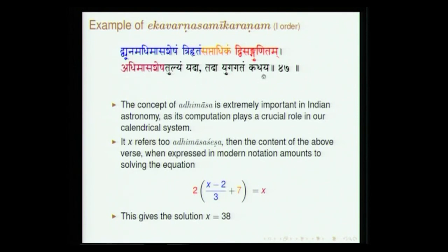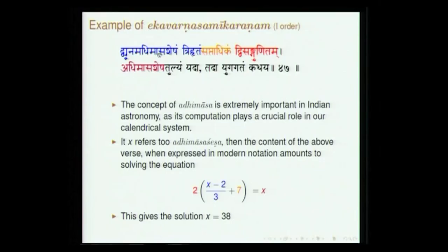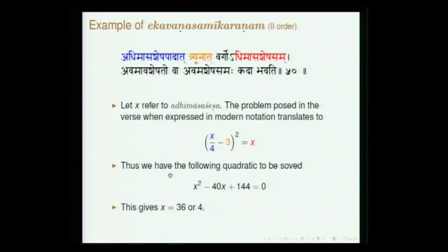A common problem in astronomy concerns adhikamasa (intercalary month) — when matching the lunar and solar calendar, 12 lunar months fall short by about 11 days per year, so every 2¾ years on average an adhikamasa is introduced. Brahmagupta frames a problem: dhivunam (x − 2), divided by 3, sapta adhikam (plus 7), multiplied, equals adhikamasa (x). This is an example of ekavarna samikarana (first-order linear equation).